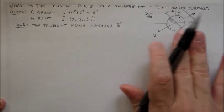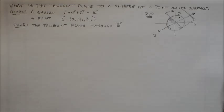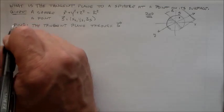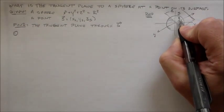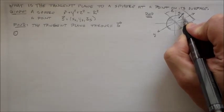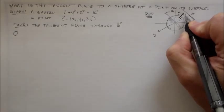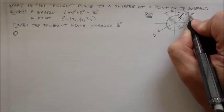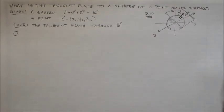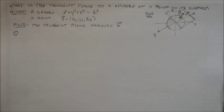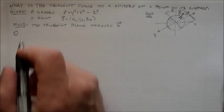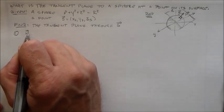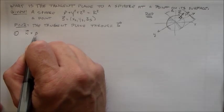The plane only touches the sphere at one point. So how can we do this? The first thing we need to do is remember that when we find the equation for a plane, we need the vector that's normal to that plane. Because it is a sphere, we already know that this normal vector is going to just be the same thing as this point S.